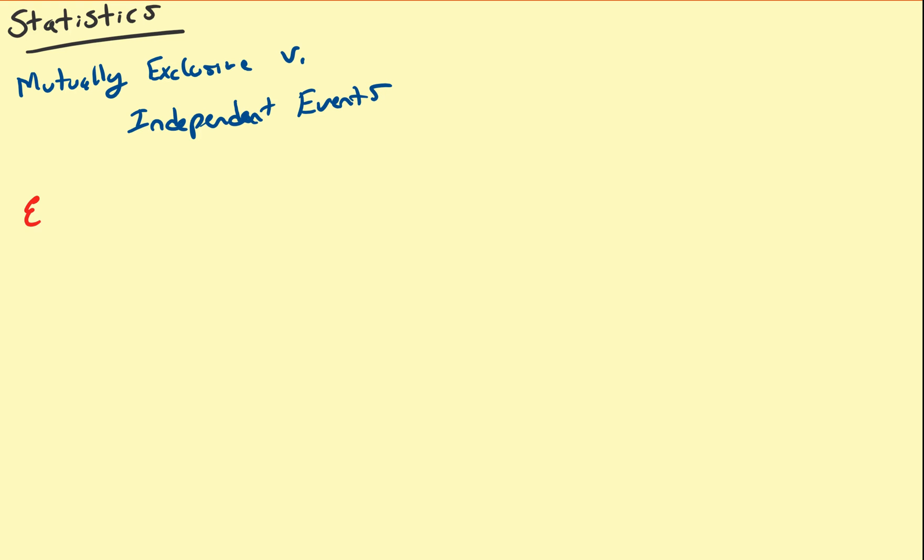So a mutually exclusive event, mutually exclusive, which I sometimes may abbreviate as just ME, pair of events are events that cannot occur simultaneously.